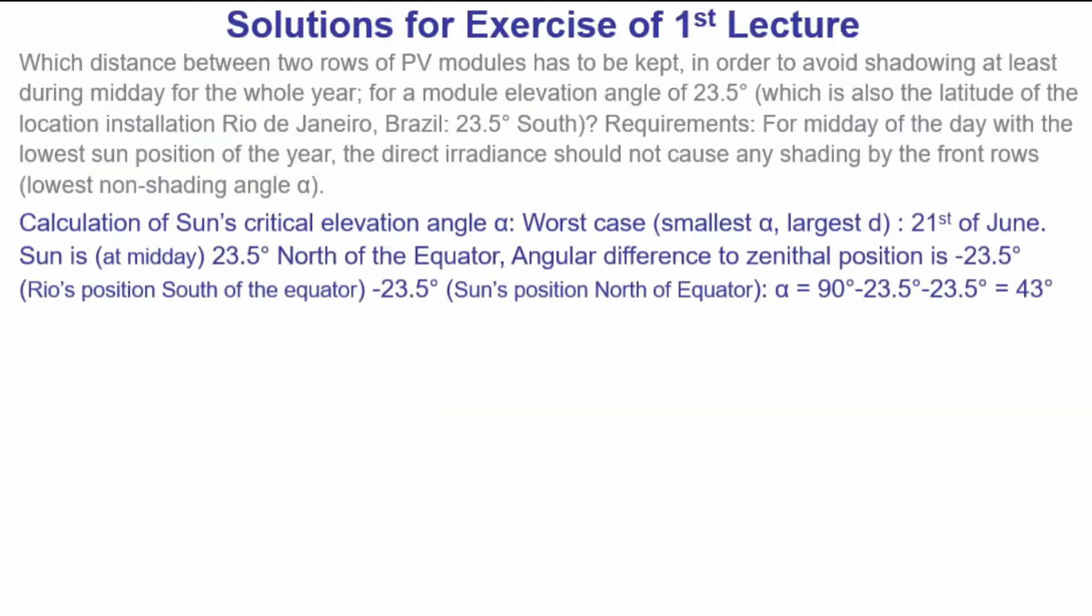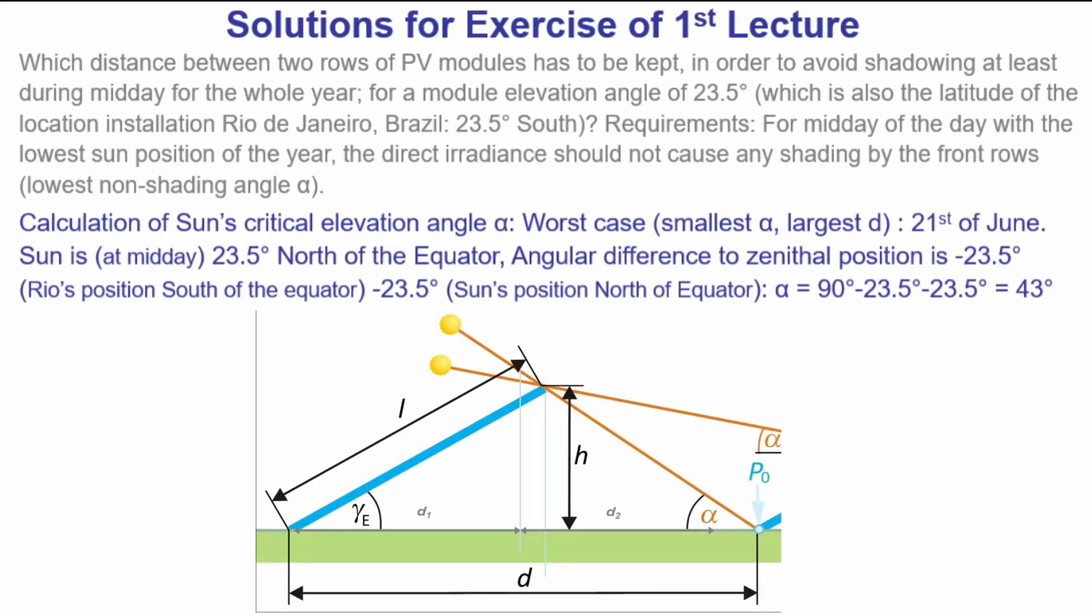So just to copy the gray part, we approach it like this. So we calculate the sun's critical elevation angle. This is worst case. That means we have the lowest elevation angle of the sun, which is then equivalent to the lowest or the smallest alpha angle. And this means that it is the largest distance between two rows. And for the southern hemisphere, this is the 21st of June.